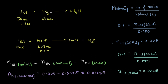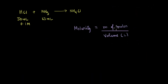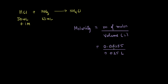Now using this information, let's calculate the concentration or molarity of the ammonia. Molarity equals number of moles divided by volume in liters. We calculated the number of moles of NH3 consumed and the volume is given. So molarity equals 0.00285 divided by 0.025, which is the volume in liters. Solving this, we get the molarity or concentration equal to 0.114 moles per liter.